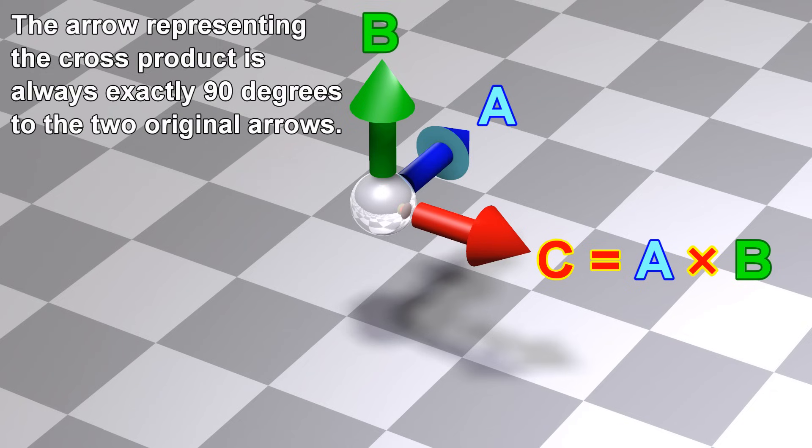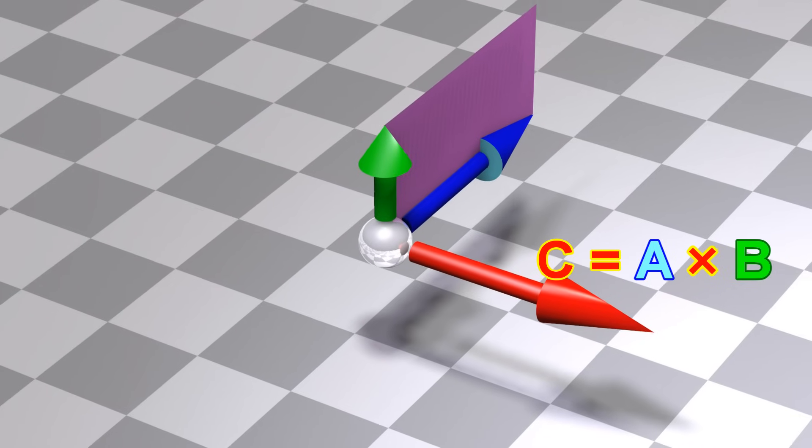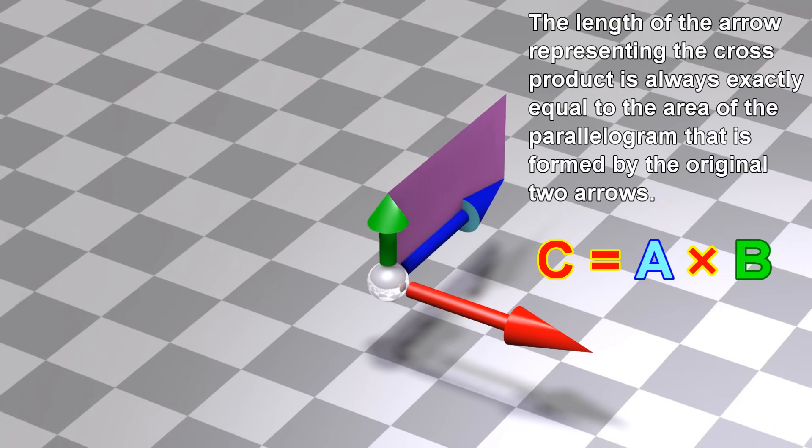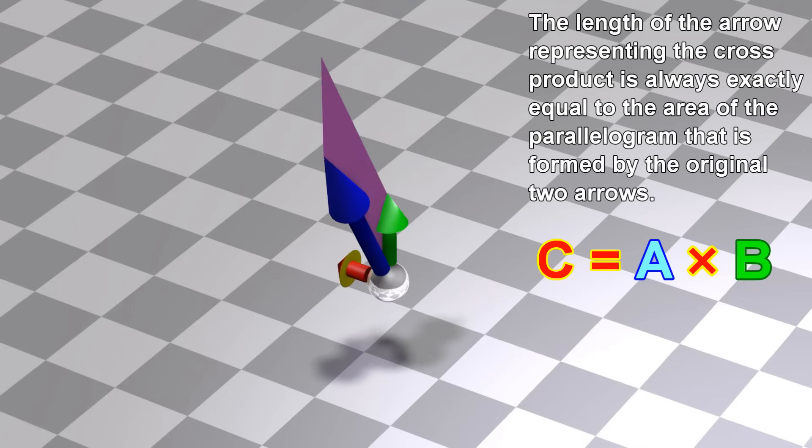The arrow representing the cross product is always exactly 90 degrees to the two original arrows. The length of the arrow representing the cross product is always exactly equal to the area of the parallelogram that is formed by the original two arrows.